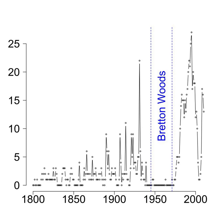According to this definition, since World War II there were only four global recessions: in 1975, 1982, 1991, and 2009, all of them only lasting a year—although the 1991 recession would have lasted until 1993 if the IMF had used normal exchange rate weighted per capita real-world GDP rather than the purchasing power parity weighted per capita real-world GDP.